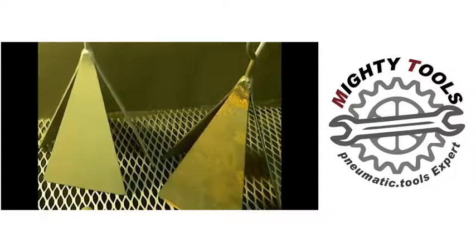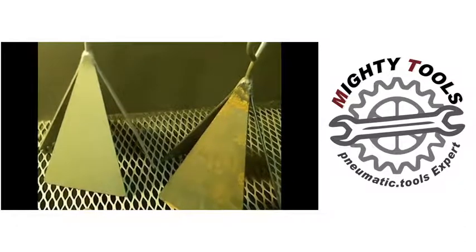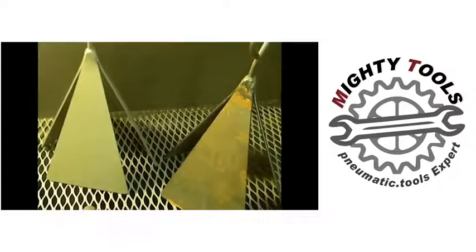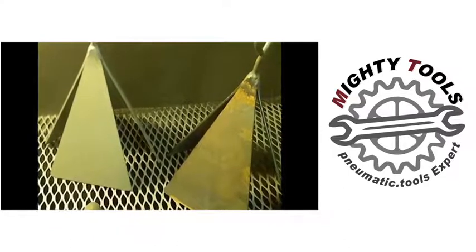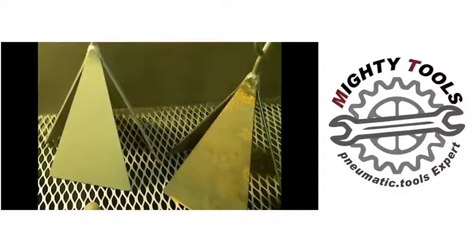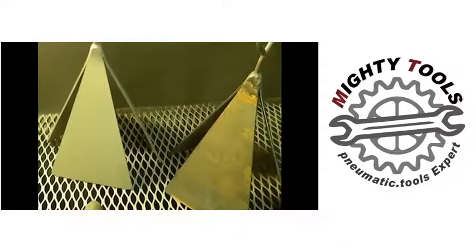Sandblasting is a really common process for removing surface rust, paint, and other debris from metal. What we have here are two wind chimes for a client. We are basically sandblasting them and preparing them for powder coating.